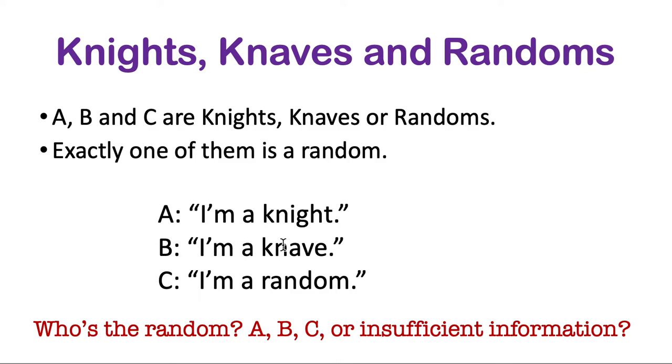So a knight could not say this. Could a knave say this? Well, no, they couldn't, because if a knave said it, the knave has to be lying. But this would be true if a knave said it, so they wouldn't be lying. So that's a contradiction too.